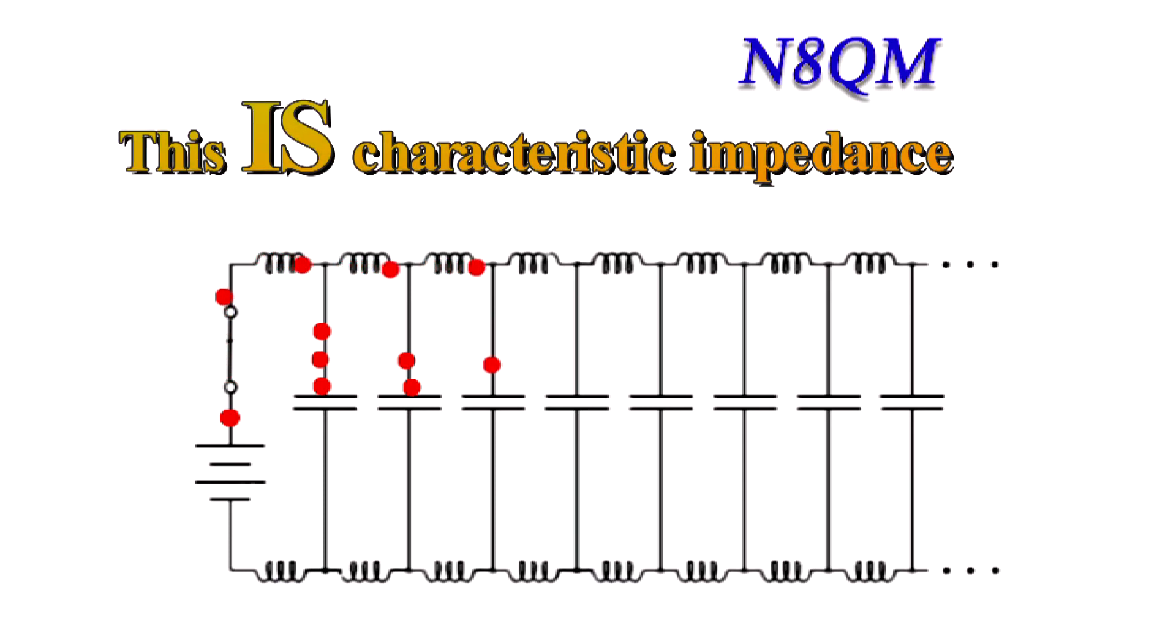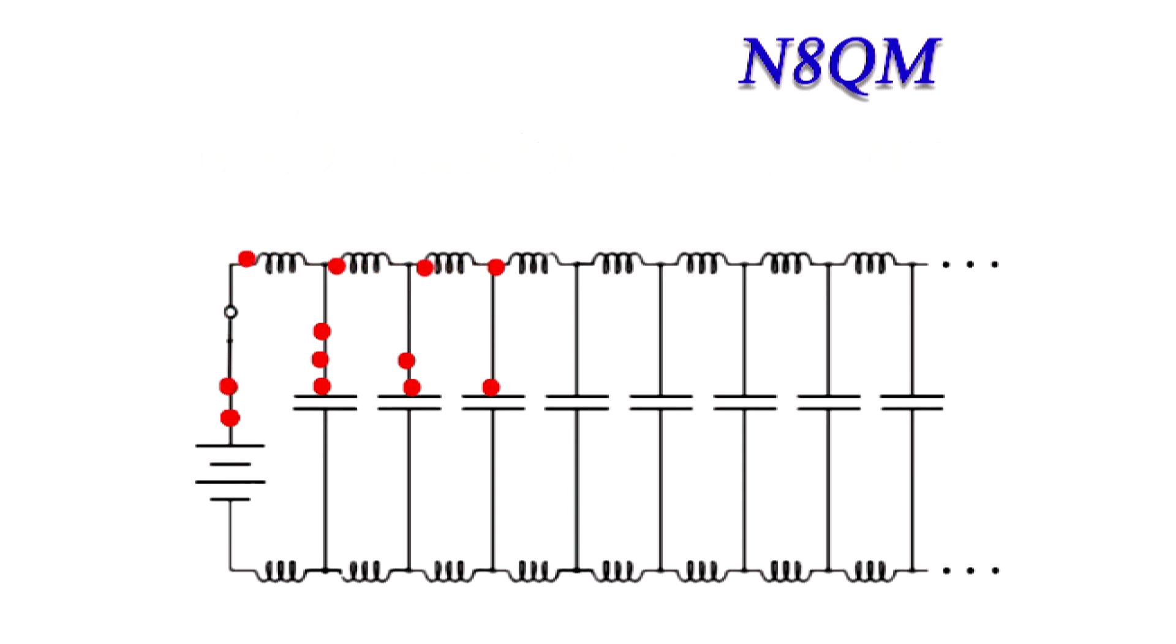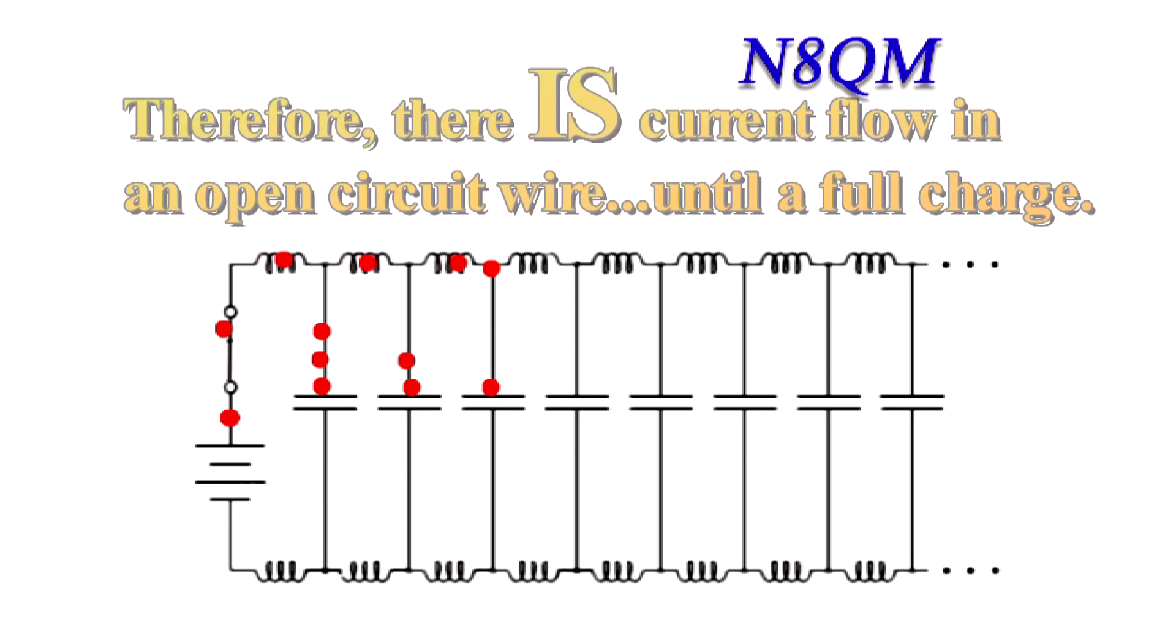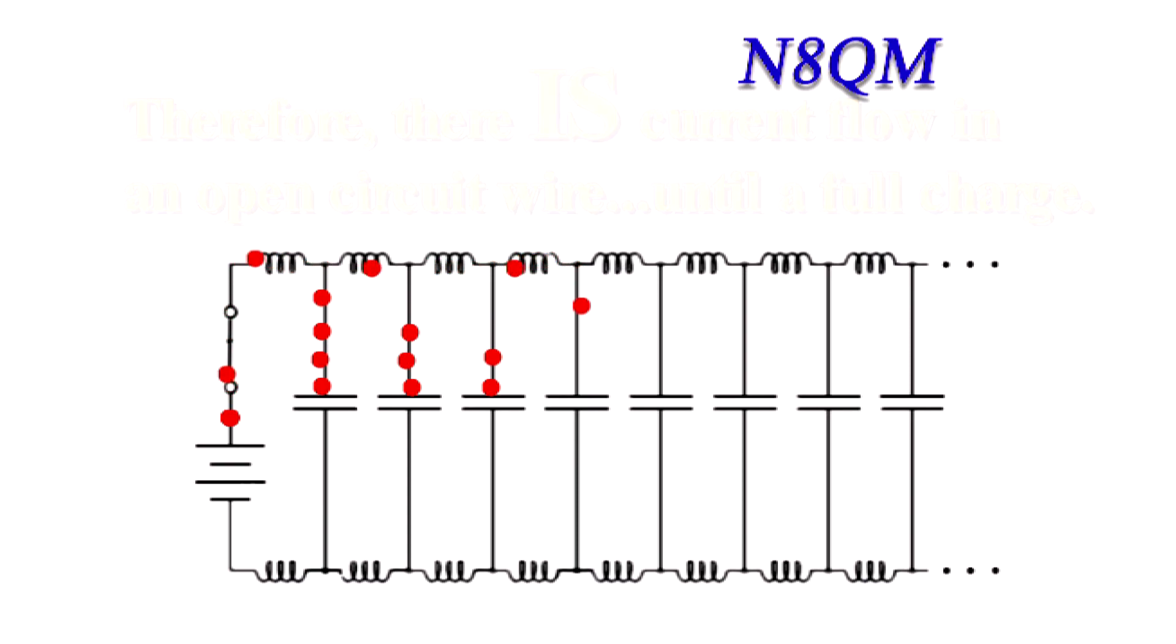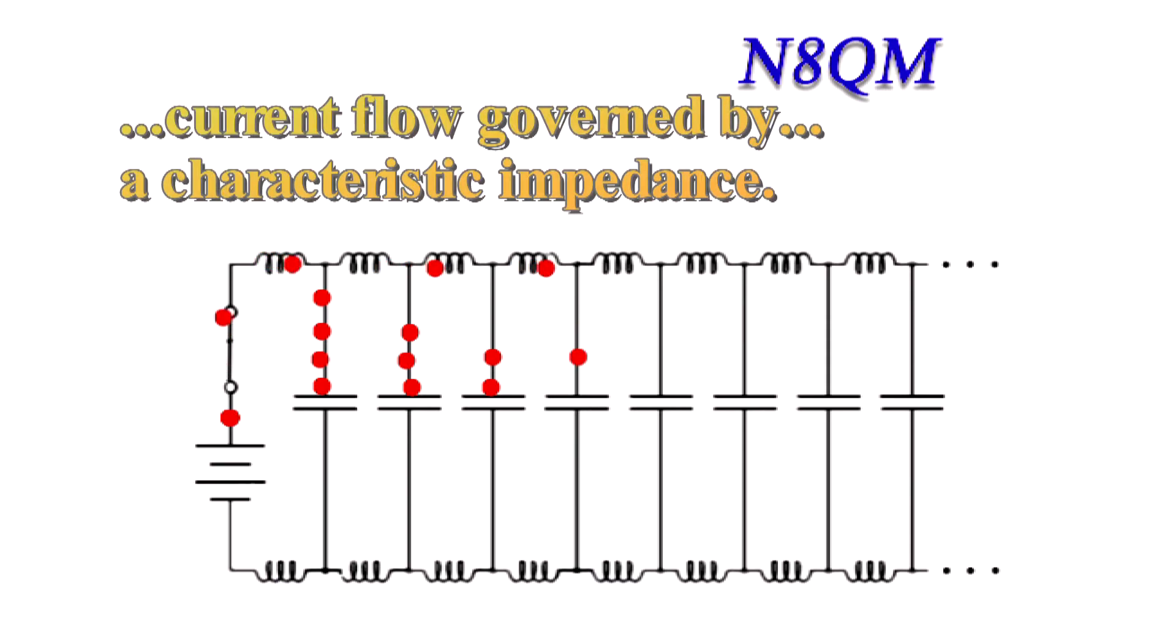You're looking at it, folks. This is characteristic impedance. There is current flow in an open wire until a full charge. What governs this current flow? Answer: its characteristic impedance.